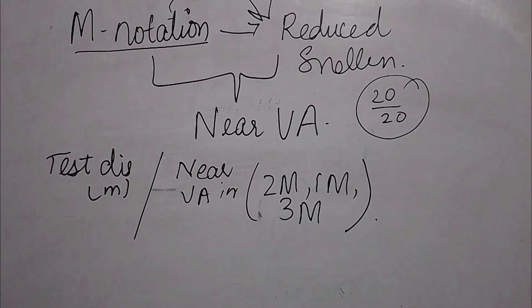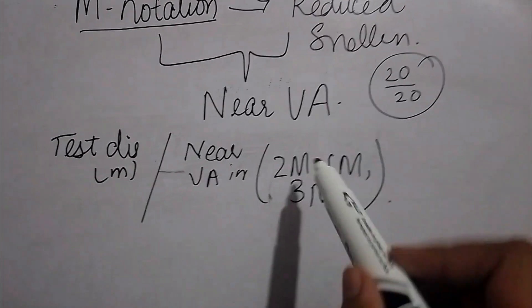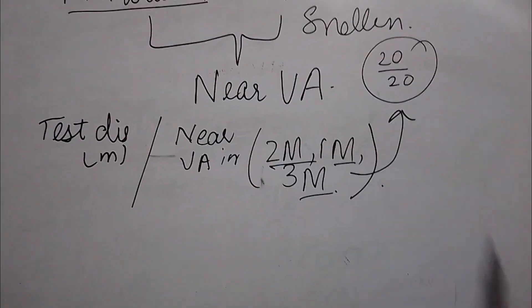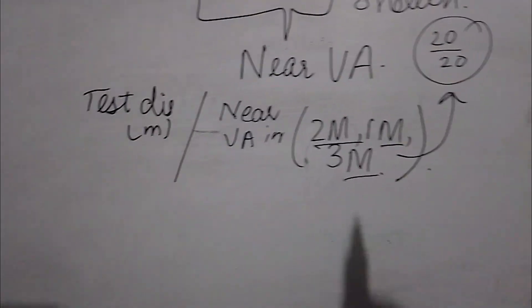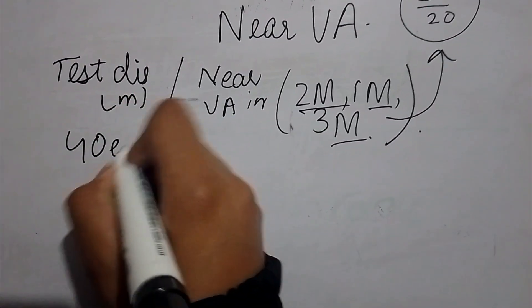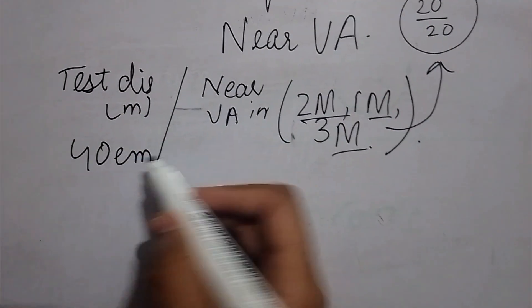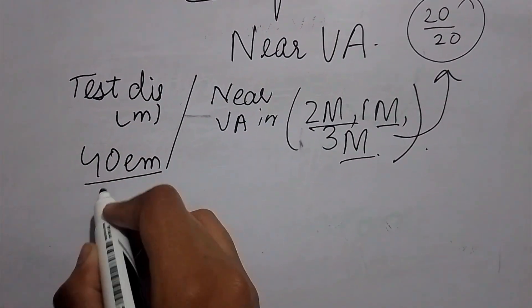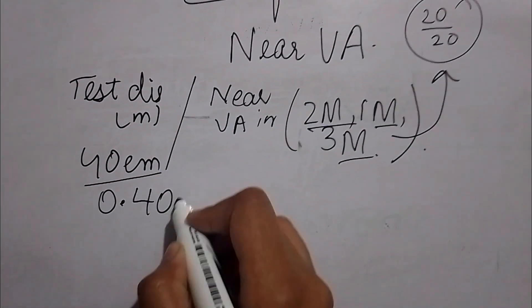So how we can convert this M-notation, M-values into the 20 by 20 manner? Testing distance is 40 cm or 30. You have to convert that 40 cm into meters and you will have 0.4 meters.